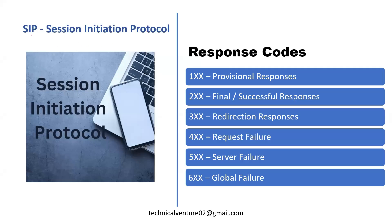Hi everyone, welcome back to my channel and the same series: Obsession Initiation Protocol Response Codes. Today I'm going to discuss the remaining 4xx messages. I've already covered these in parts one and two, and this third part will cover call transaction doesn't exist, loop detected, too many hops, and all other remaining 4xx messages. After that, I'll discuss 5xx and 6xx messages in one video.